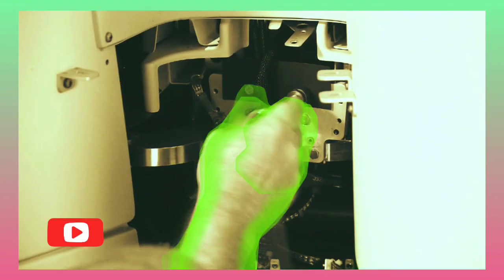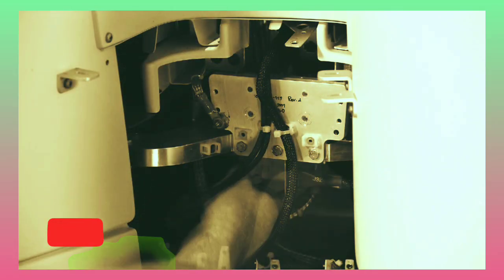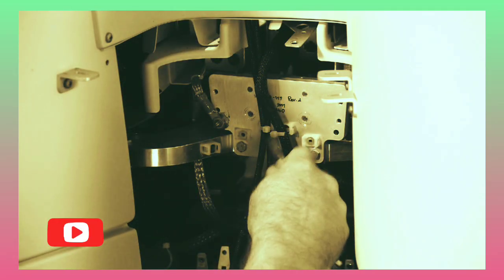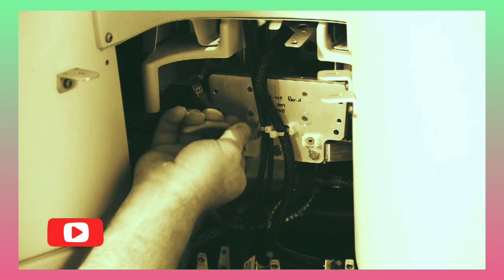With the bottom rear access panel removed, remove the four bolts that hold the center console to the frame. Then, cut the tie wraps and disconnect the harness cables.